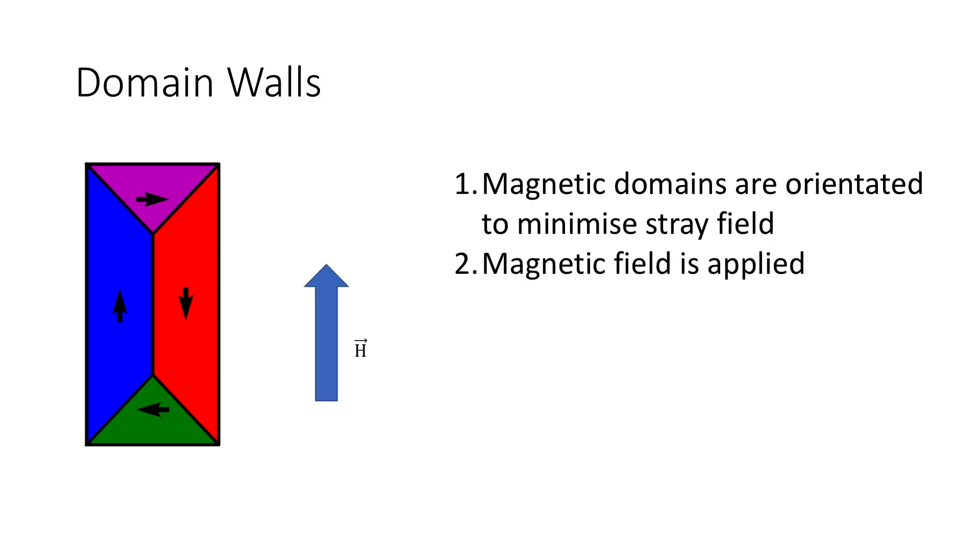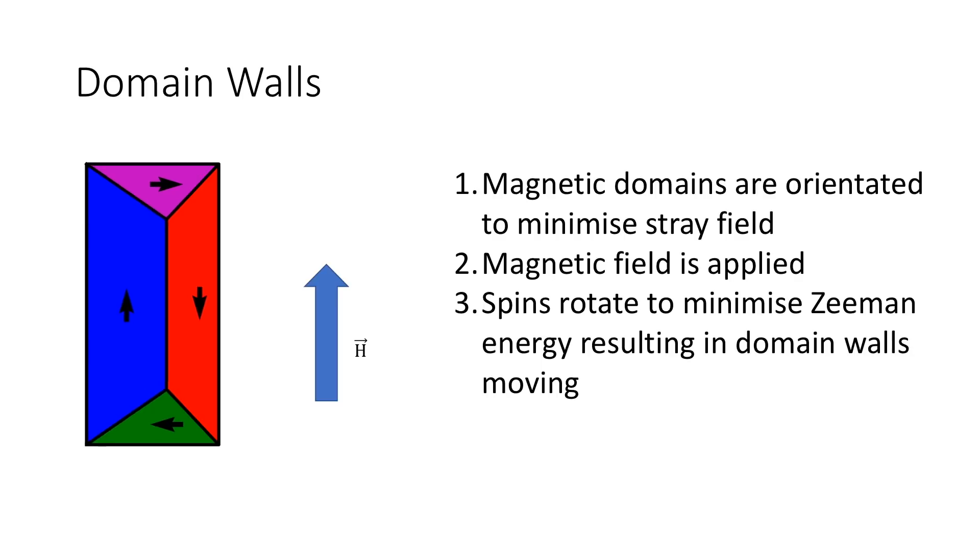But then we apply a magnetic field, and at this point the Zeeman energy becomes the dominant term. You can see that the blue is in a low energy state as it is aligned with the field, but the green and purple regions are in a high energy state, and the red region is even higher. To minimize the energy, the spins try to align with the magnetic field, and this results in domain walls moving. The blue region grows at the cost of the other regions until the domain walls reach the edge and they disappear. The object is now in a saturated state where all spins point in one direction.